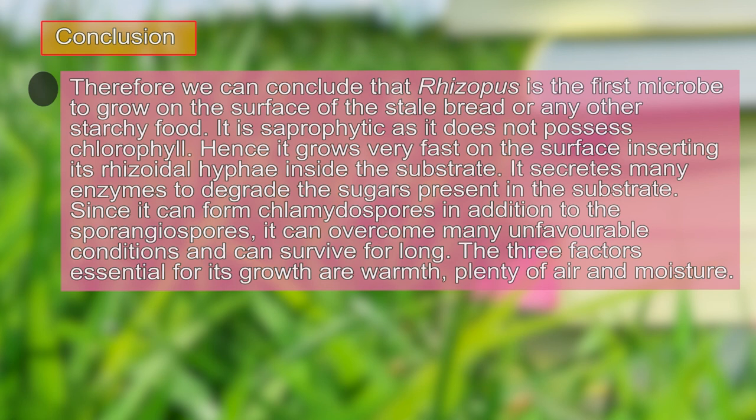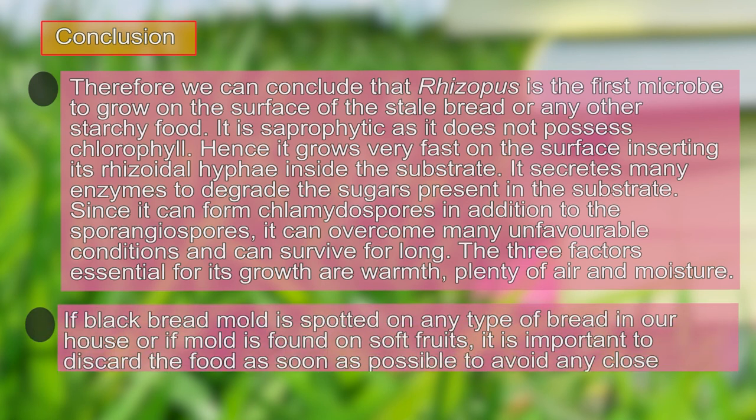The three factors essential for its growth are warmth, plenty of air, and moisture. If black bread mold is spotted on any type of bread, or mold is found on soft fruits, it is important to discard the food as soon as possible and avoid contact with the organism, as it may lead to the development of zygomycosis. Thank you.